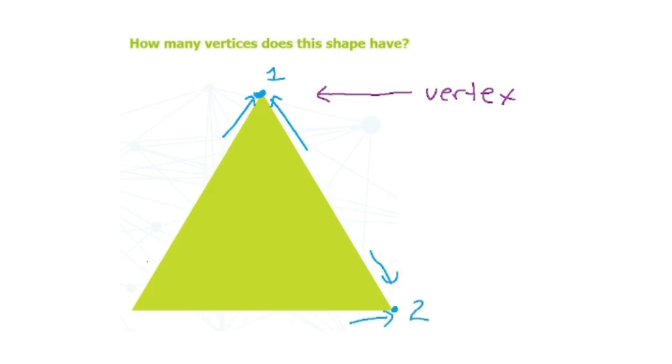And then there's a vertex here because this side meets with this side at this point, so this is vertex number three. So to answer this question, there are three vertices on this triangle, and all triangles have three vertices.